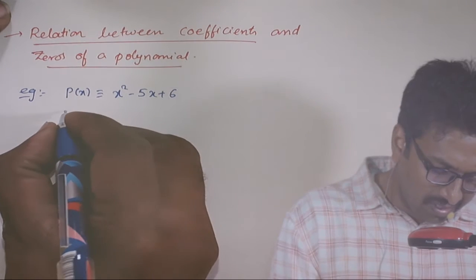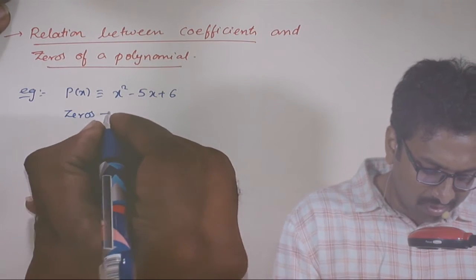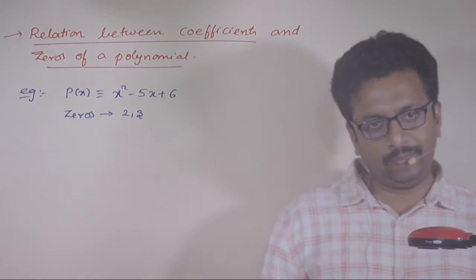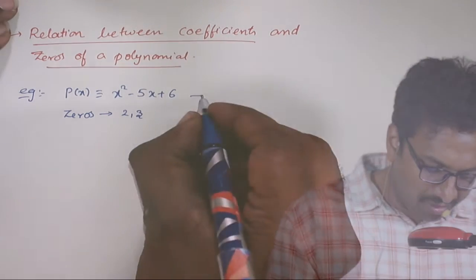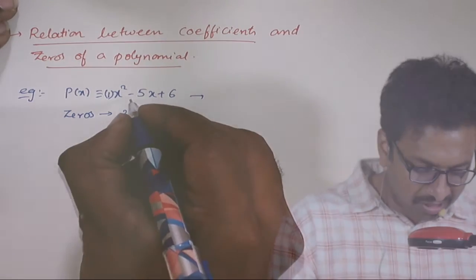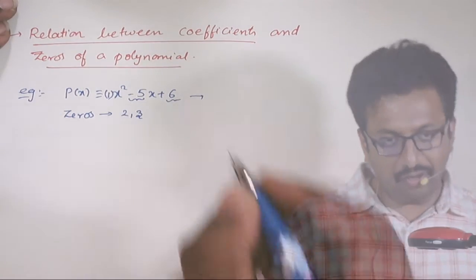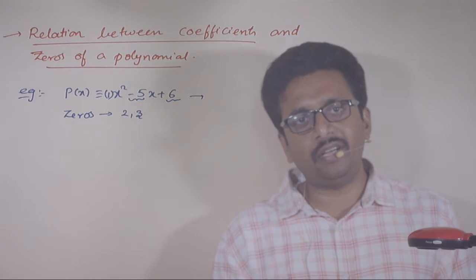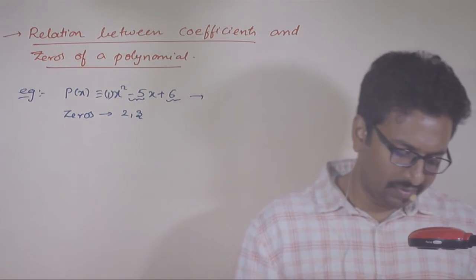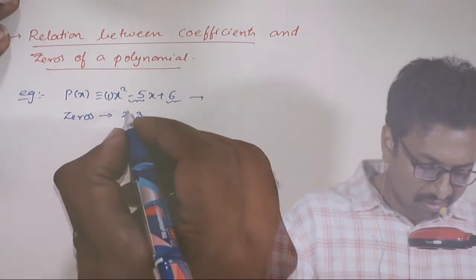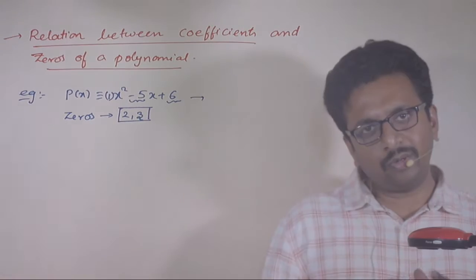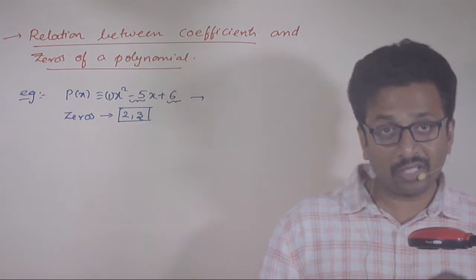What are the zeros of the polynomial? The zeros are already 2 and 3. And what are the coefficients? The coefficient of x square is 1, the coefficient of x is minus 5, and the coefficient of the constant term or x power 0 is 6. So the zeros are 2 and 3, and we have minus 5 and 6. Let us do an observation.